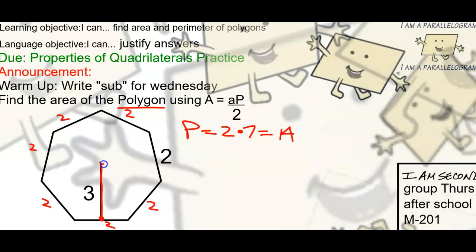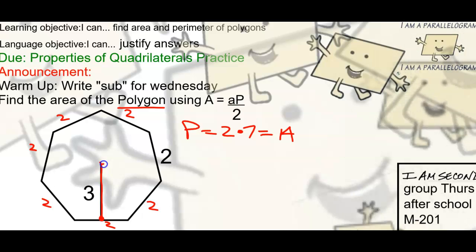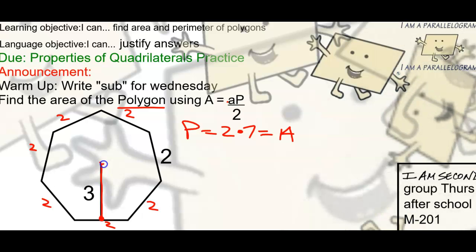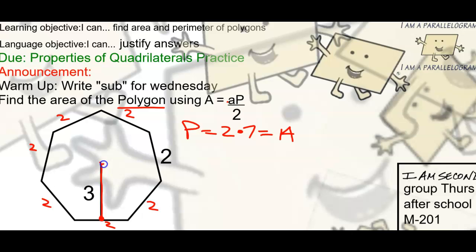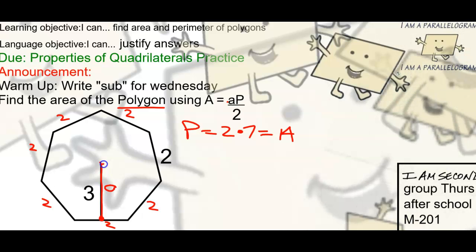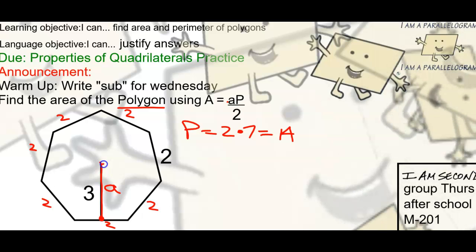So that's the a word. What's the a word again? The math a word we're talking about today - what's this little a? Apothem. Say it. Either apothem or apothem.